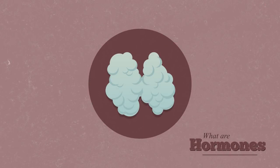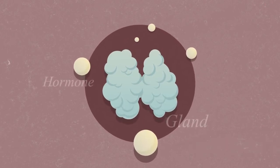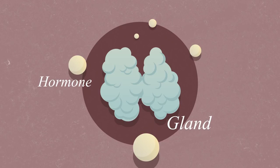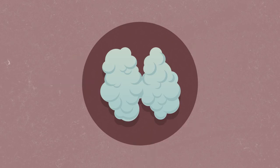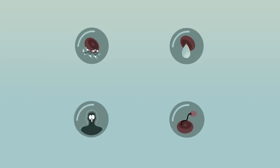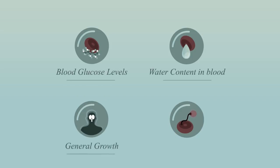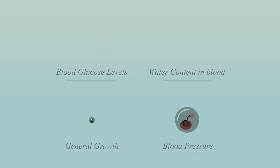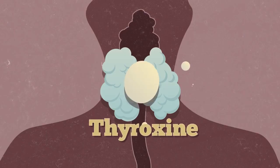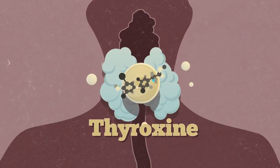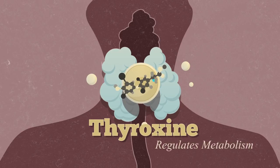What are hormones? A hormone is a chemical messenger that is secreted or released into our bloodstream by specific organs known as glands. Hormones regulate or control many processes in our body, including blood glucose levels, water content in blood, general growth, and blood pressure, just to name a few. As an example, thyroxine, which is a hormone secreted by your thyroid gland, helps to regulate metabolism. In other lessons you will learn about a few of these hormones in more detail.